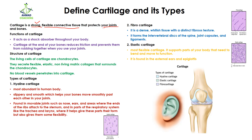Cartilage is going to protect your joints as well as your bones, because they are present at joints where two bones are connecting together. The function of cartilage is that they act as a shock absorber throughout your body. For example, if you suddenly fell down, this is a shock to your body, and in this condition your bones are protected from that shock by the help of cartilage.